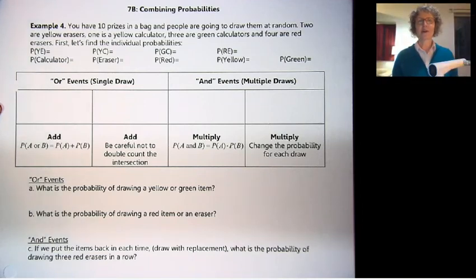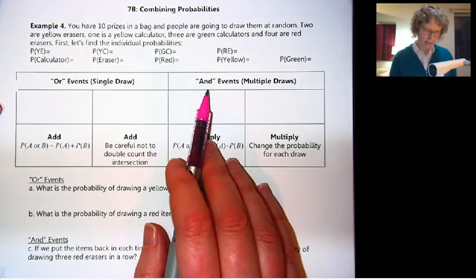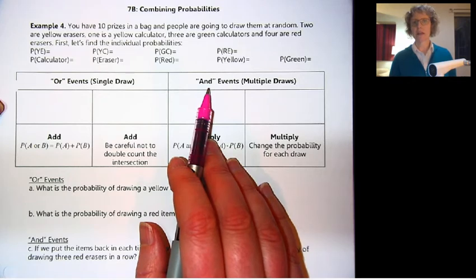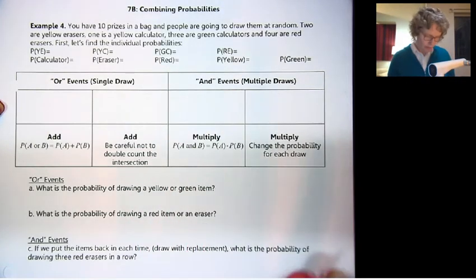Hi, in this video we're going to talk about combining probabilities, either with OR events or AND events. We've got an example here. If you need the worksheet, you can get it on my website.